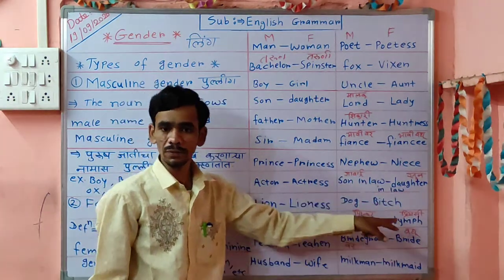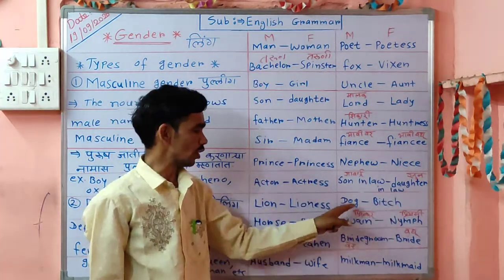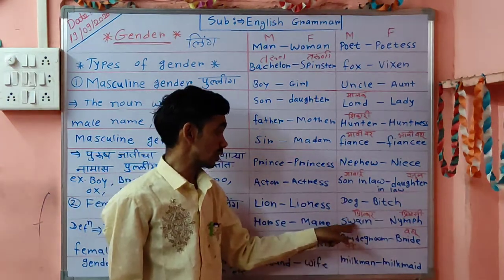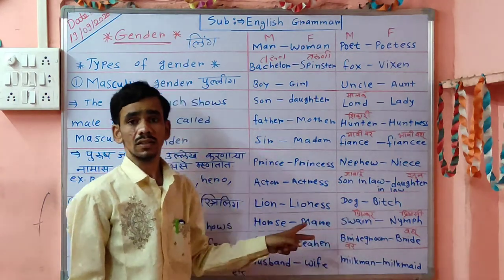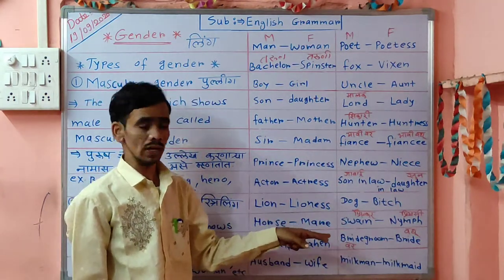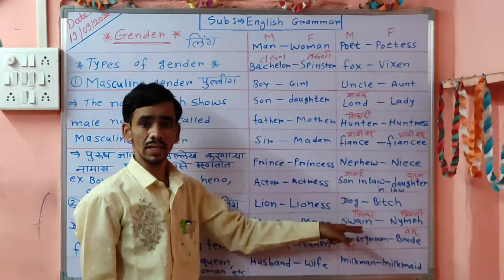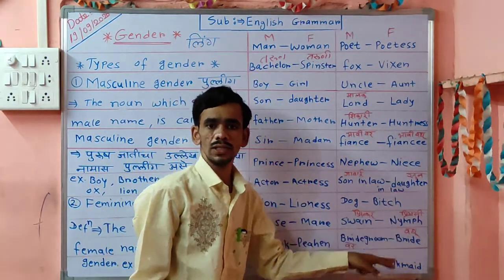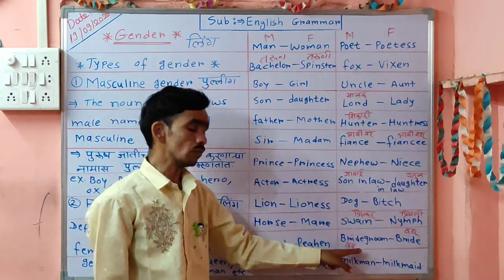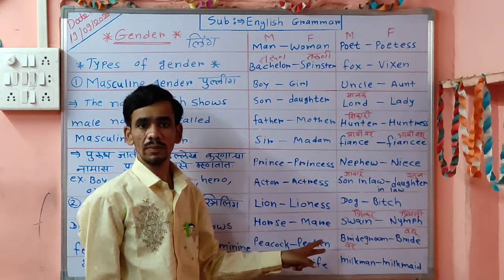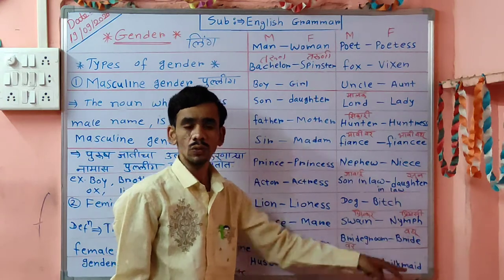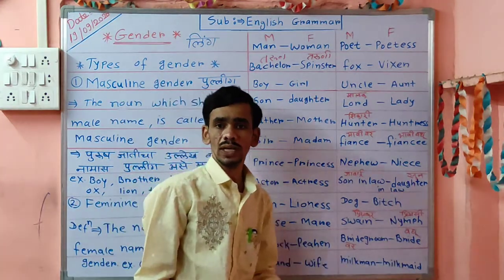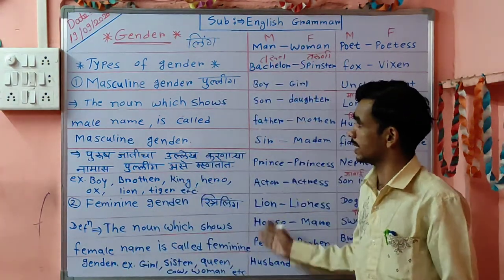Then dog — opposite is bitch. Dog — Kutra — opposite is Kutri. Bridegroom — the one who loves someone — becomes bride on the opposite side. Bridegroom means Var, and the opposite is bride — Vadhu. Then milkman — Doodwala — opposite is milkmaid — Doodwali. Do you understand all these examples?